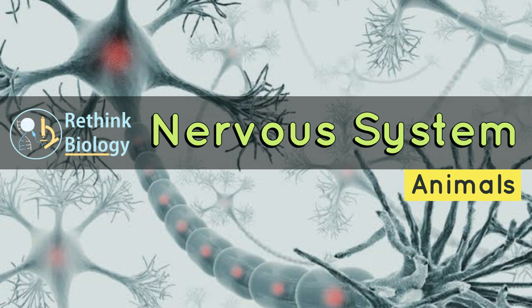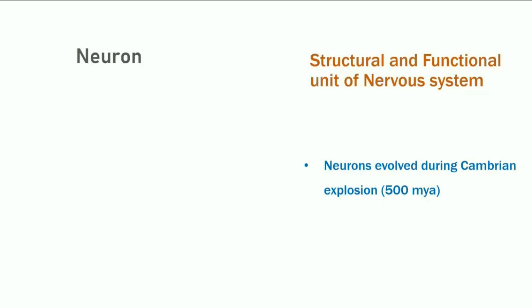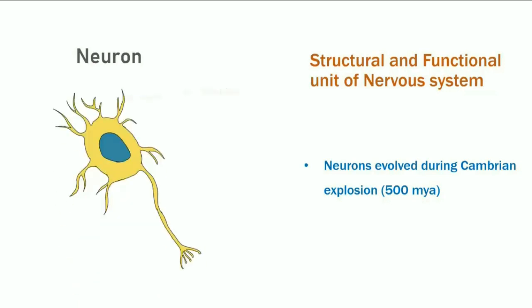As you all know, the nervous system is the system of our body which gives us the ability to sense. The neurons are the structural and functional unit of the nervous system; they evolved during the Cambrian explosion about 500 million years ago. This is the structure of a neuron showing the dendrites, nucleus, cell body, axon, and synaptic terminals.